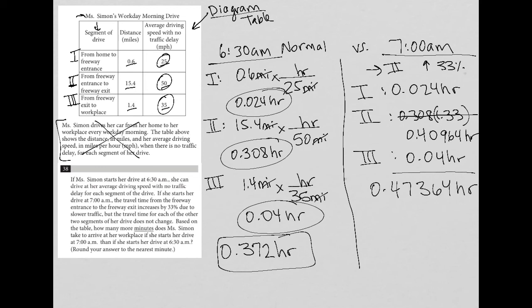The question asks how much more time it takes. I need to find the difference: 0.47364 minus 0.372, which equals 0.10164 hours.